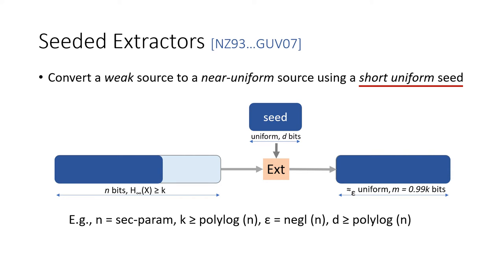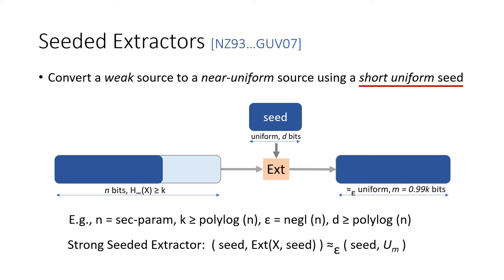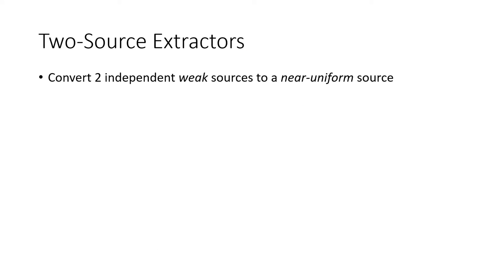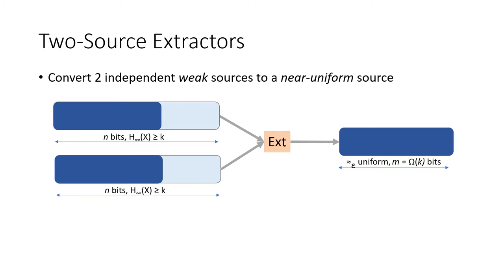The definition of a seeded extractor can be further strengthened to what is called a strong seeded extractor, where the requirement is that the output distribution be statistically indistinguishable from random even given the seed. The problem with seeded extractors is that you need the seed, which is itself a uniform independent source of randomness. The next primitive we look at, a two-source extractor, relaxes this so that the source and the seed are both imperfect. A two-source extractor considers a setting where there are two weak sources of randomness, and the only assumption is that the two sources are independent — neither of them needs to be uniform.